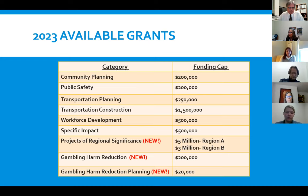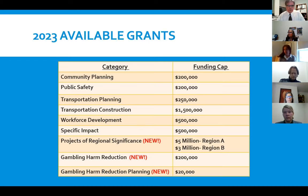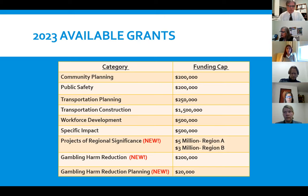Transportation planning is also useful to assist communities getting into the state's TIP fund — seed money to help get work into the state's Transportation Improvement Program. Transportation construction grants have a maximum of $1.5 million, found in section 2.4 of the guidelines. These are mostly for construction of transportation-related improvements, and projects must start by June 30, 2024.